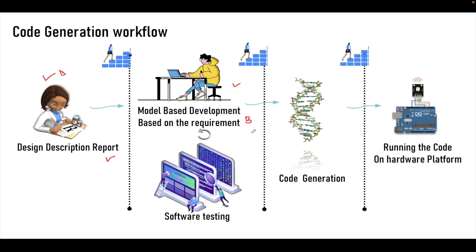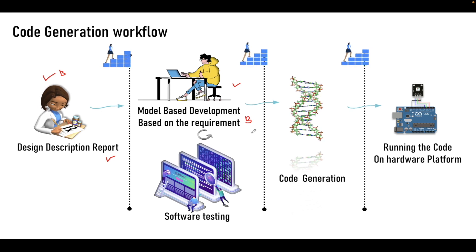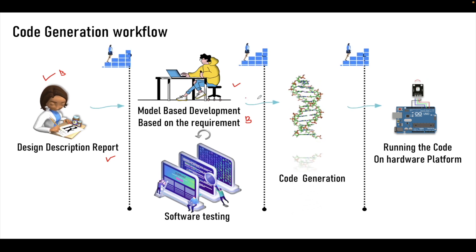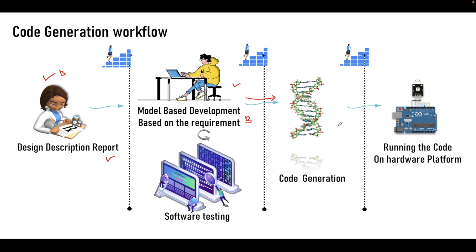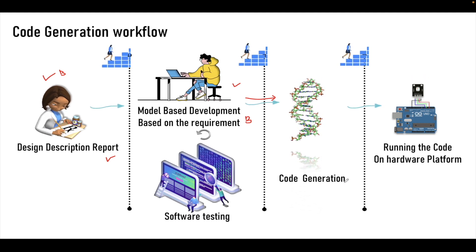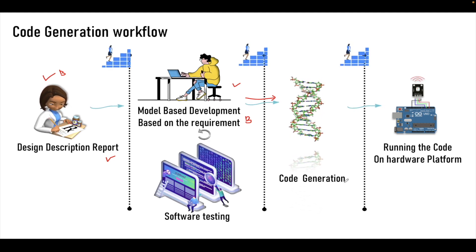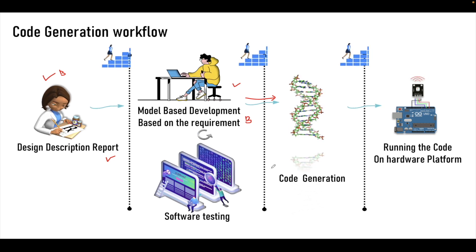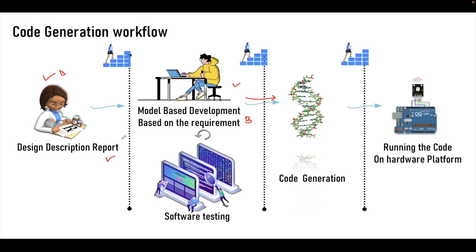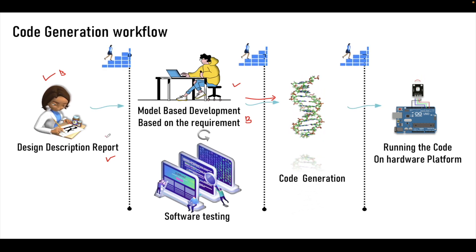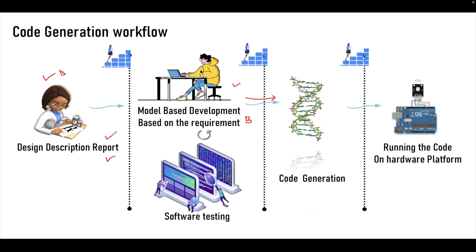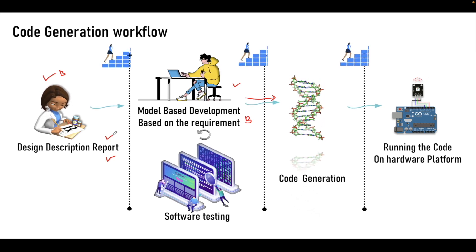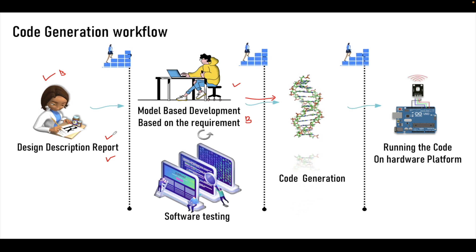The code generation is directly auto-generated from the model, and once we have the code we need to verify whether the behavior of the code is matching the model behavior and also it should match the requirement document. The requirement document describes the complete behavior of the software that we are going to be developing.